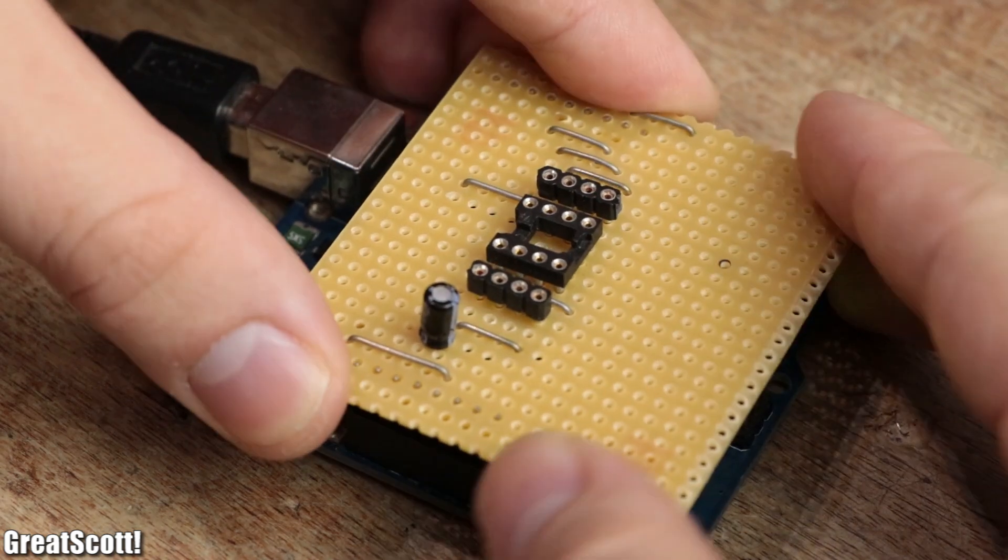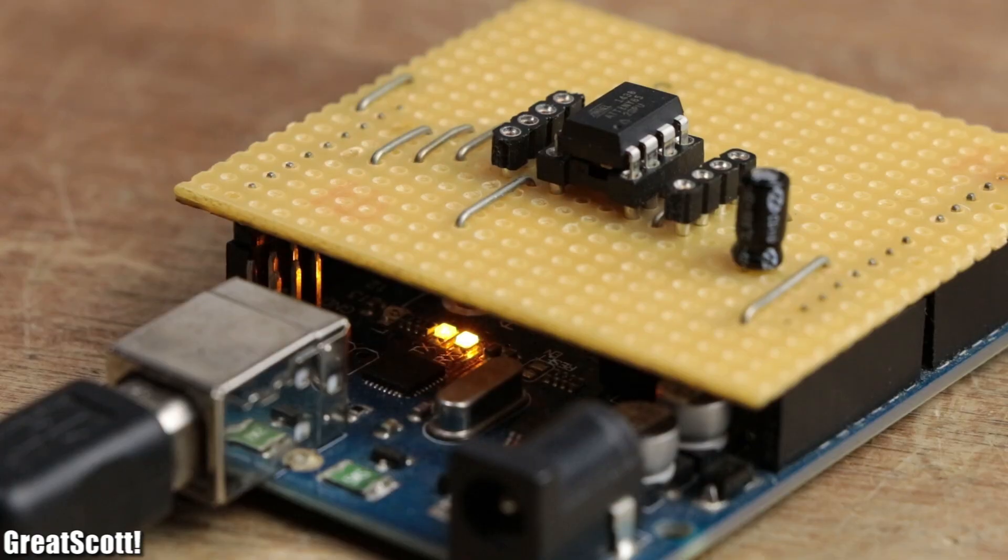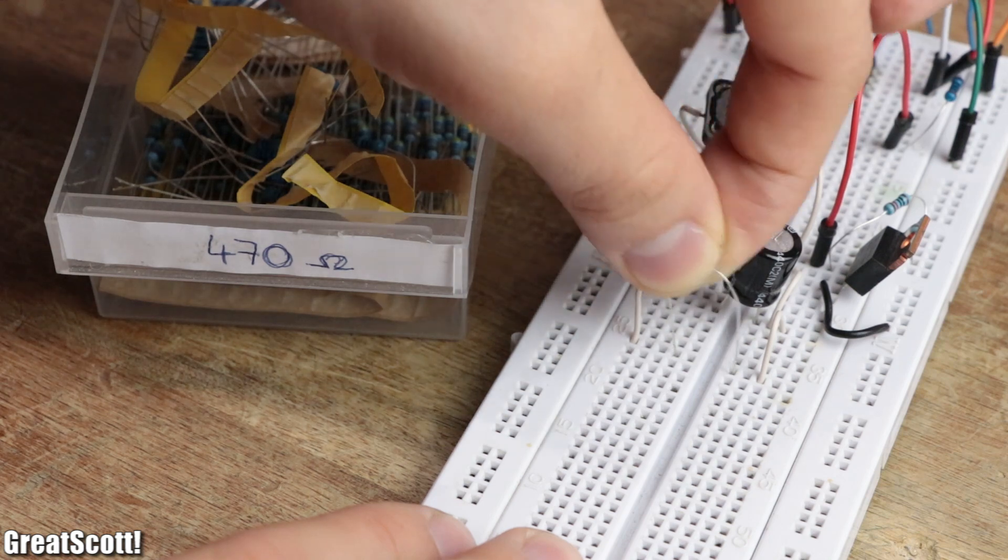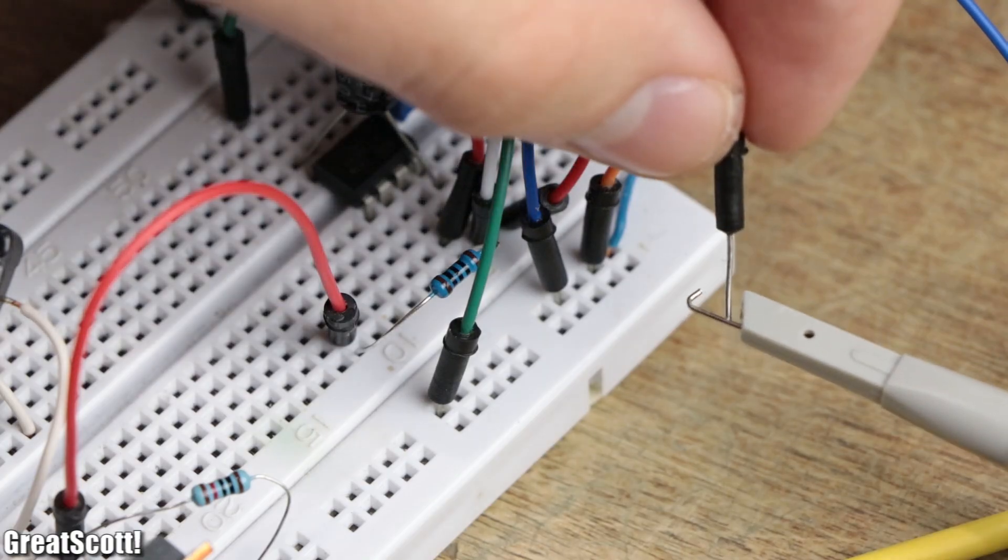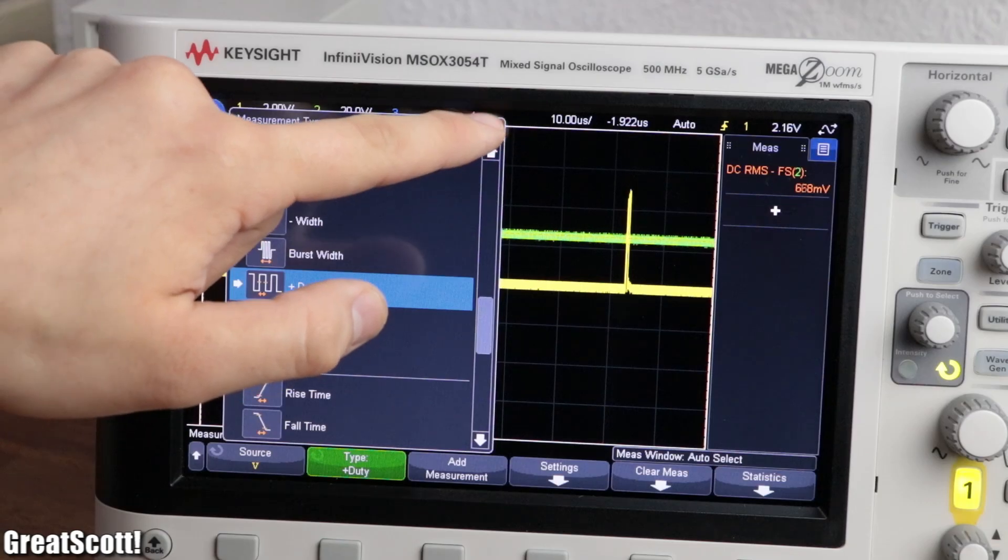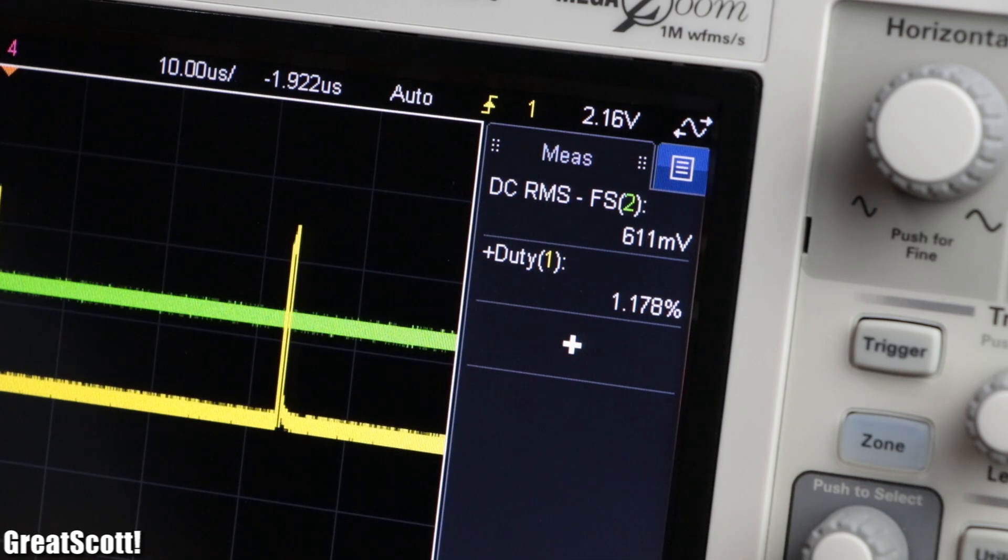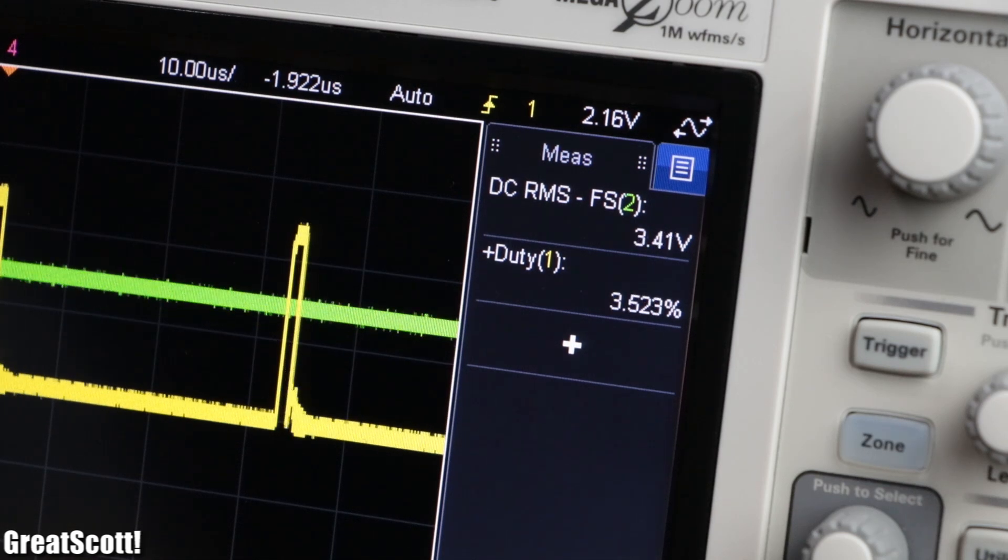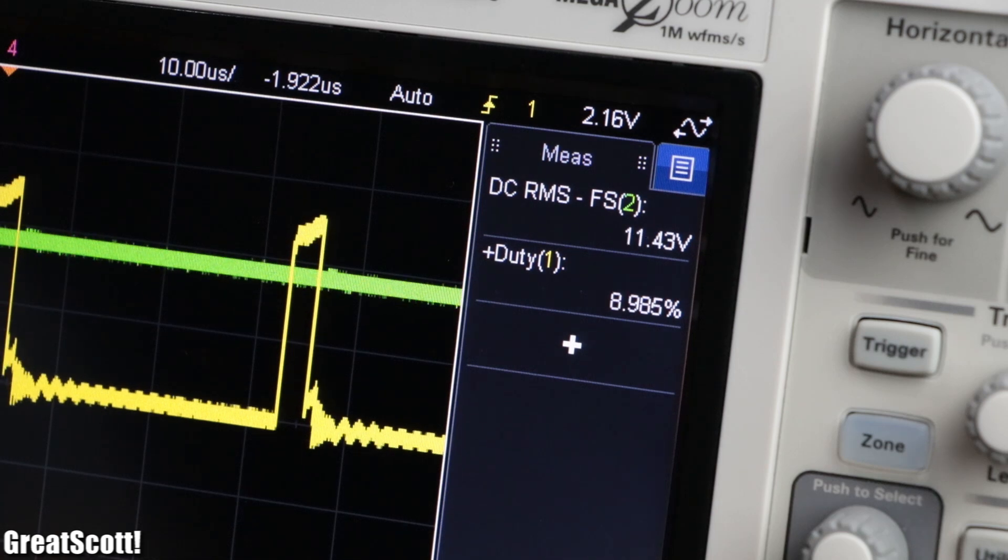I programmed the microcontroller beforehand with my homemade programming shield. After adding a small load on the output of the converter and hooking up my power supply and the probes of my oscilloscope, it was time to correlate the duty cycle with the output voltage. By using a small duty cycle below 9%, the transferred energy of the coil is rather low and only allows output voltages below the input voltage.